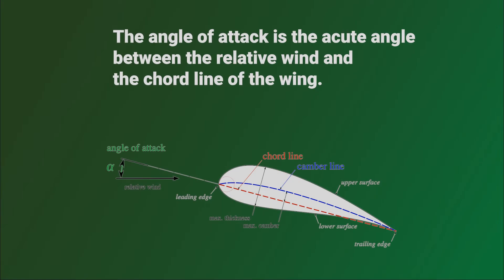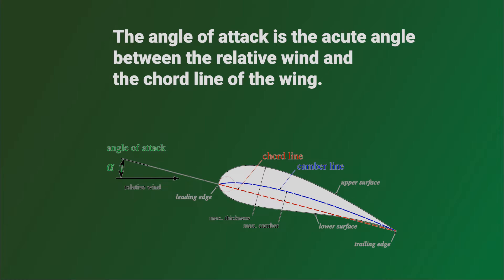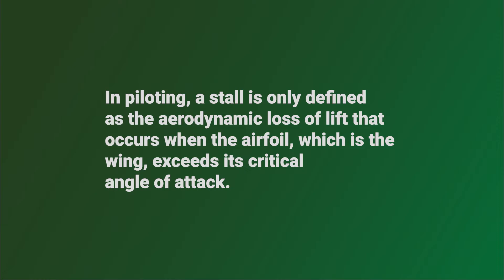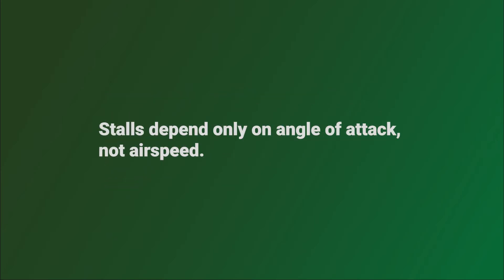Now, let's cover some terms. The angle of attack is the acute angle between the relative wind and the chord line of the wing. A stall is an aerodynamic condition in which an aircraft exceeds its given critical angle of attack and it's no longer able to produce the required lift for normal flight. In piloting, a stall is only defined as the aerodynamic loss of lift that occurs when the airfoil, which is the wing, exceeds its critical angle of attack. Stalls depend only on angle of attack, not airspeed.